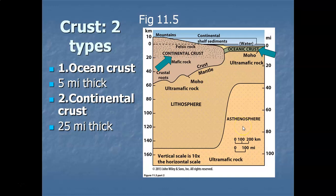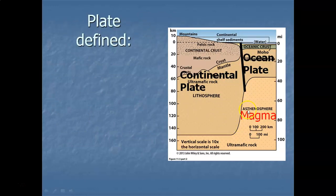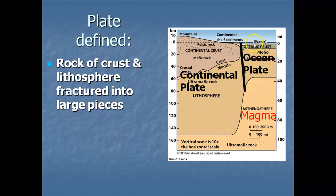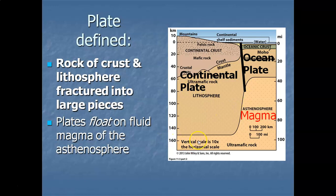Now that we have the basics of the earth's makeup, we can define what a plate is. A plate is the solid rock of the earth's crust and the solid rock of the lithosphere, fractured into large pieces. A big fault line creates two plates. The leading edge of movement defines whether it's a continental plate or an ocean plate — if the leading edge is a continent, it's a continental plate; if ocean, an ocean plate.